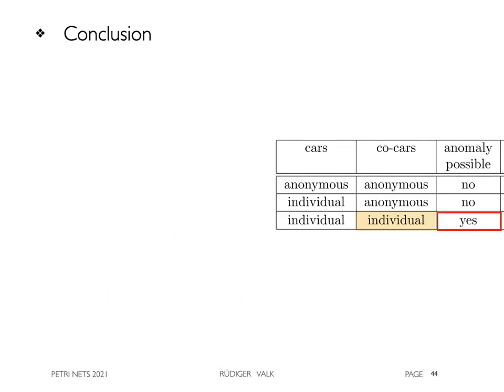For an overview, we give the following table, containing circular traffic queues with anonymous cars and gaps, with individual cars and gaps, with individual cars and co-cars, where the anomaly can occur.